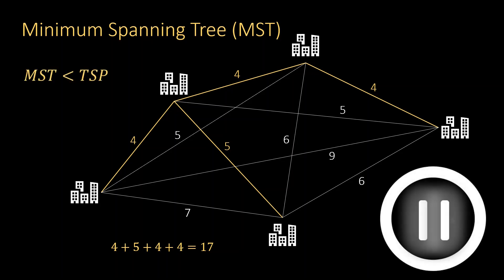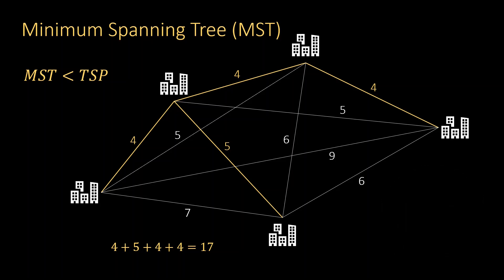Also take a moment to think about why the MST is always shorter than the shortest TSP tour. Let us understand why the MST is always shorter than the shortest TSP tour. Removing any edge from the shortest tour leaves us with a spanning tree. And the minimum spanning tree is, by definition, at least as short as this.